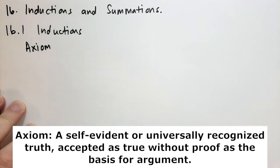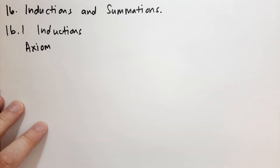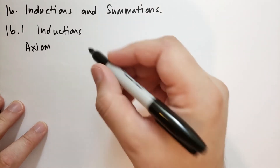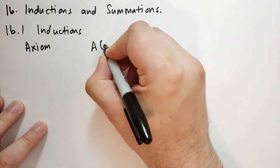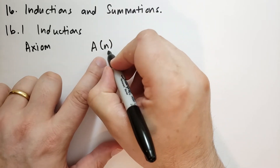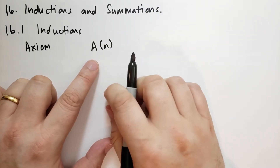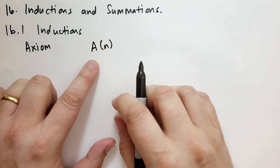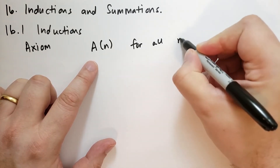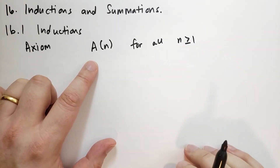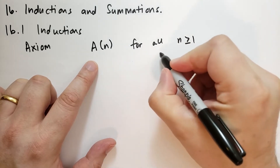What the axiom says is: suppose that we want to prove a certain assertion concerning the positive integers n. The assertion is described by some statement A that has n inside of it. We're going to try to prove this for all n greater than or equal to 1, where n is an integer.